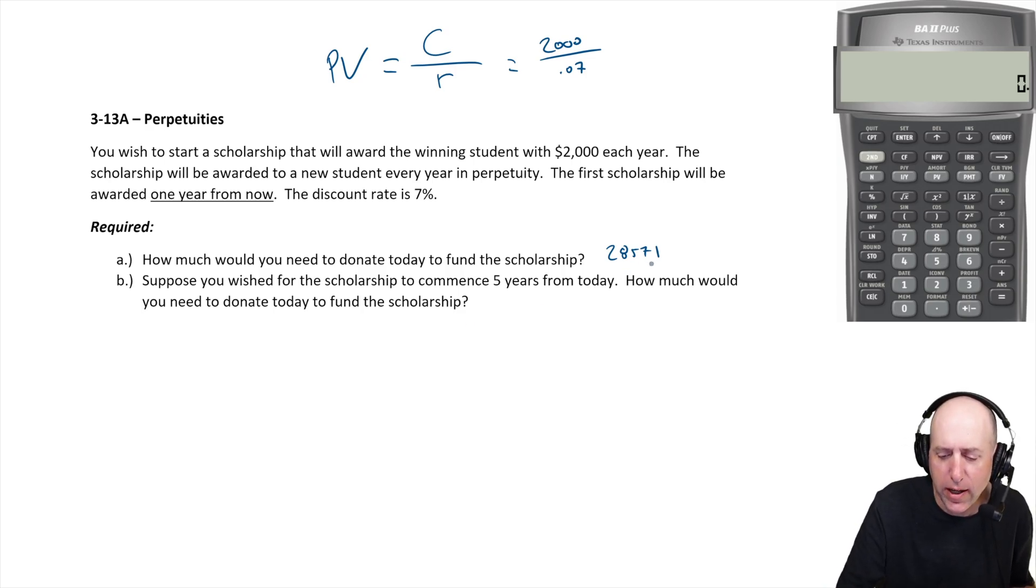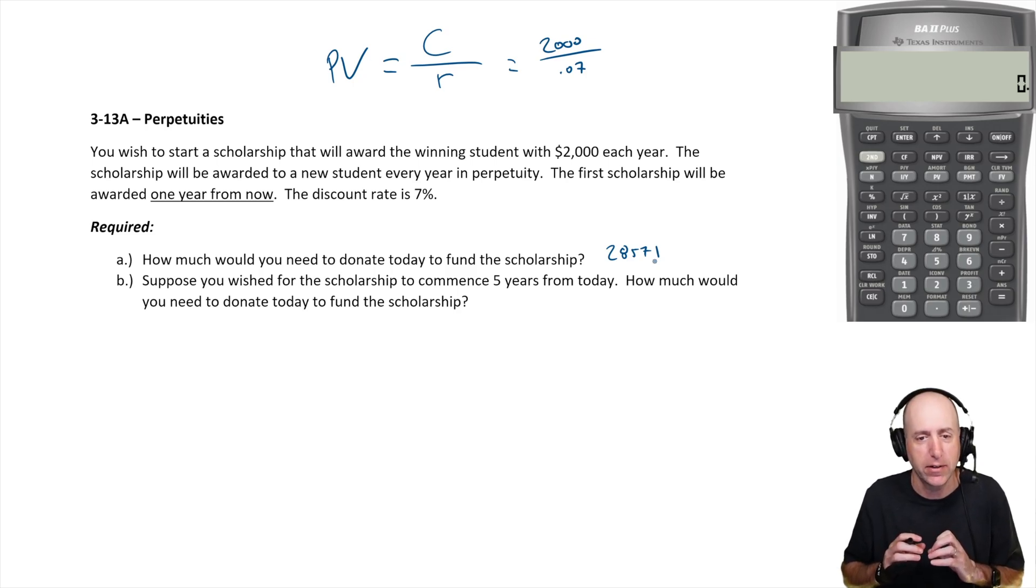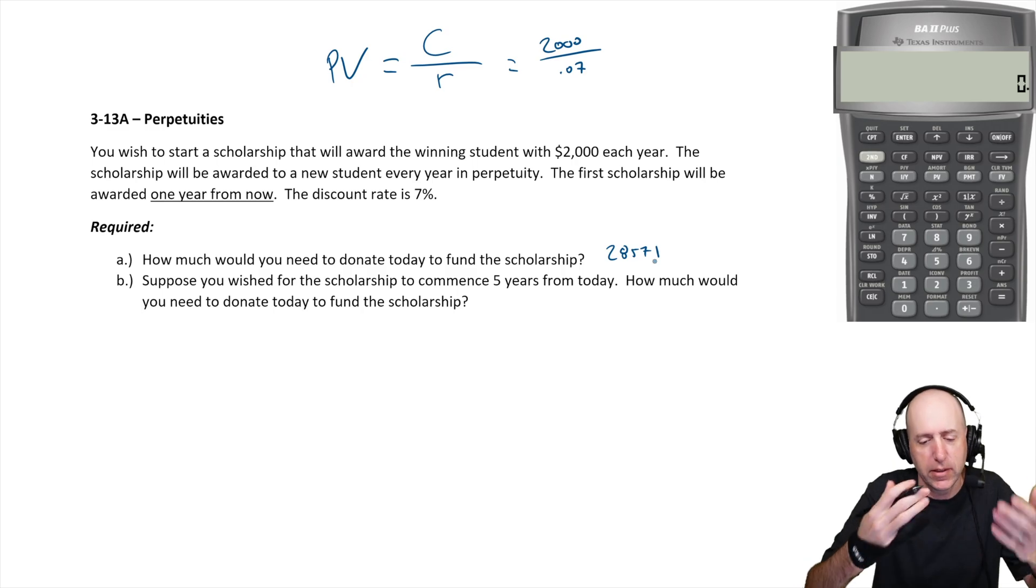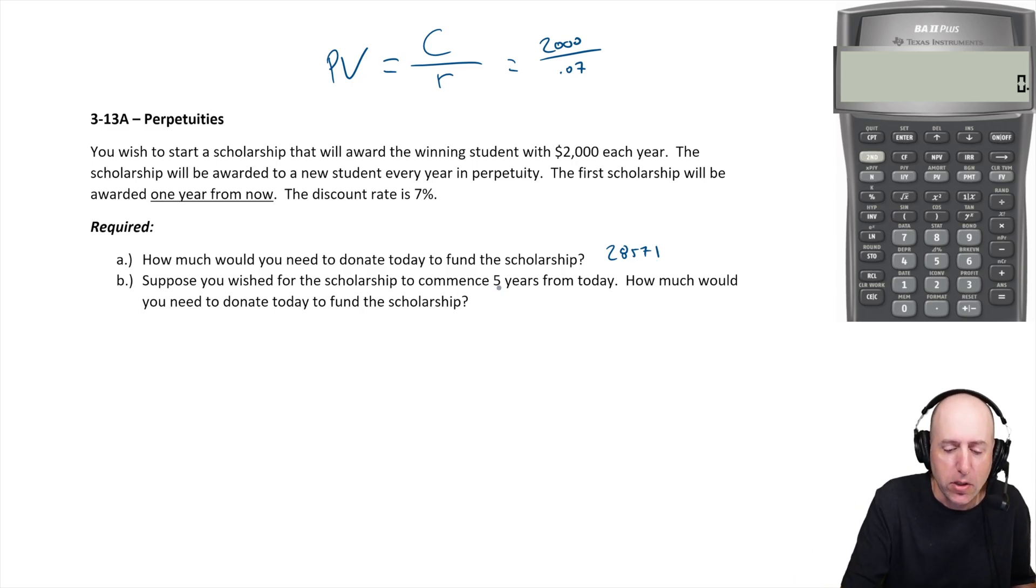Remember, we need 28,571 at the beginning of this year so we pay it out at the end of the year, because it's going to grow by 2000 and that's what makes this a perpetuity. So we actually need this 28,571 to be in place four years from now in order to start paying out the perpetuity five years from now. So I need 28,571 four years from now.